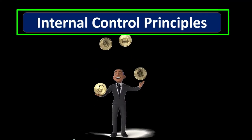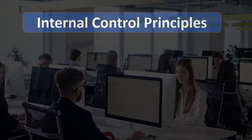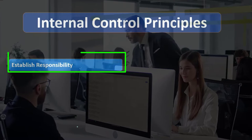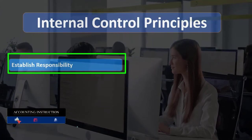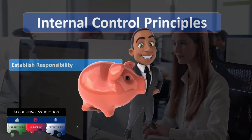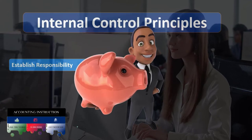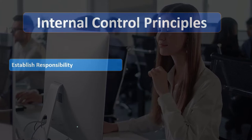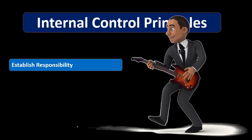Now we'll discuss internal control principles put in place to achieve those goals. The first principle is to establish responsibility. We want to make sure one individual is assigned responsibility for particular outcomes. If we do not assign clear responsibility and outcomes don't match expectations, we won't know who to hold accountable and won't be able to take action. Assigning responsibility is key to implementing and monitoring controls.